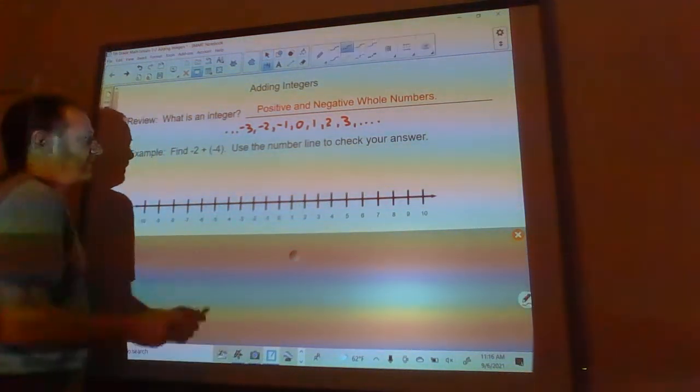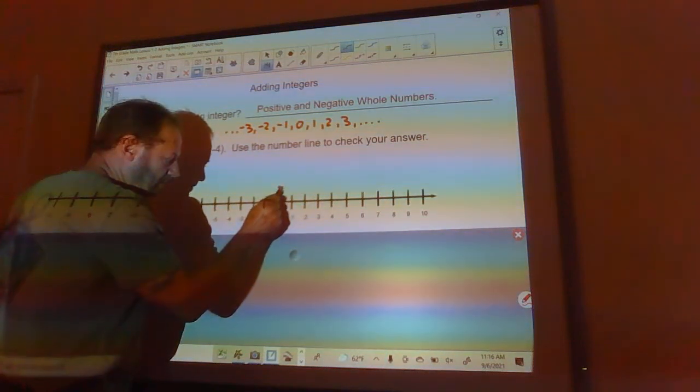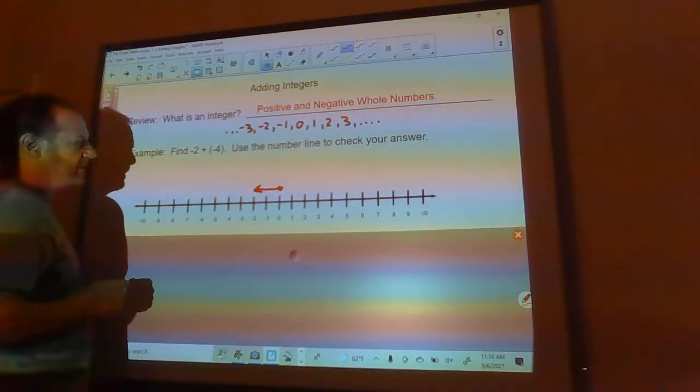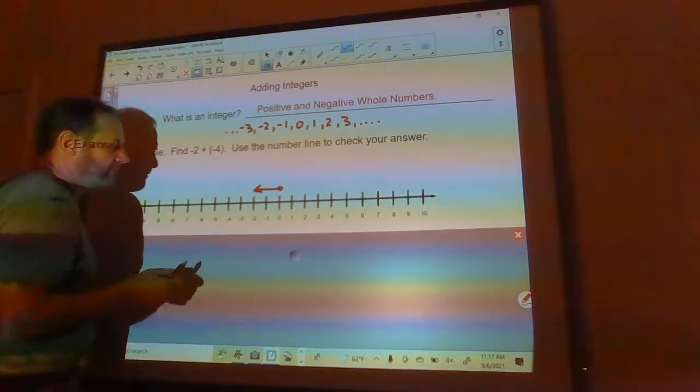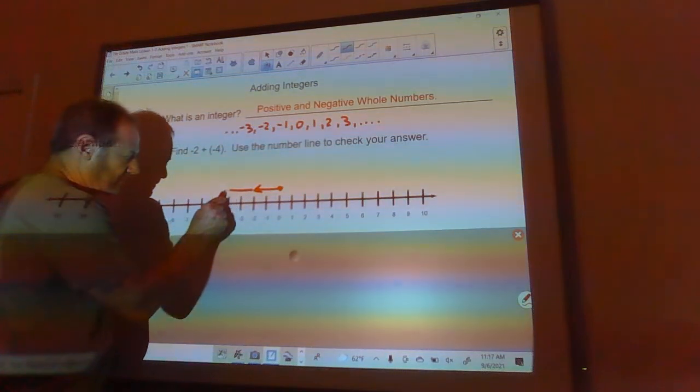But if you get confused, you can use a number line to answer that kind of question. So here's the way we can do it. Negative 2, we start out at 0 and we go negative 2. So there's negative 2, and then we go another negative 4.